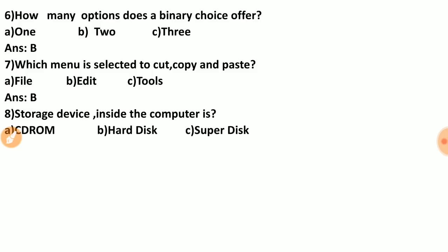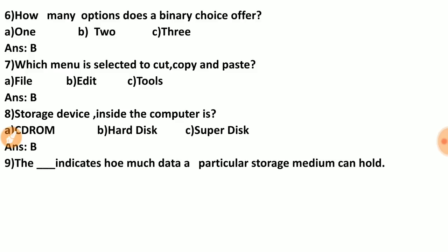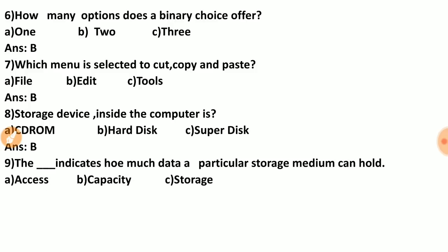Question eight: storage device inside the computer is called what? Options are: CD-ROM, hard disk, super disk. The correct answer is A — hard disk. The internal storage device of a computer is called the hard disk.